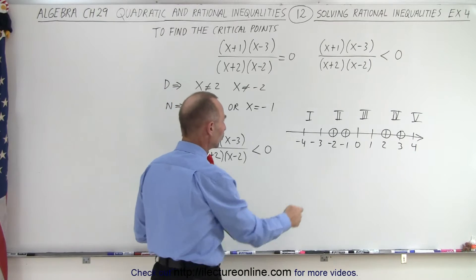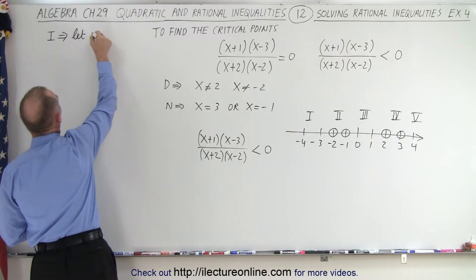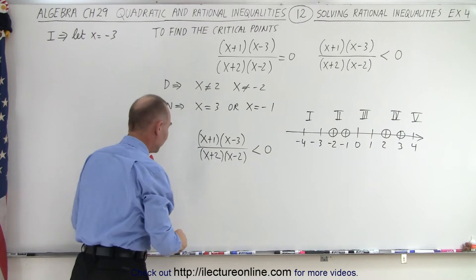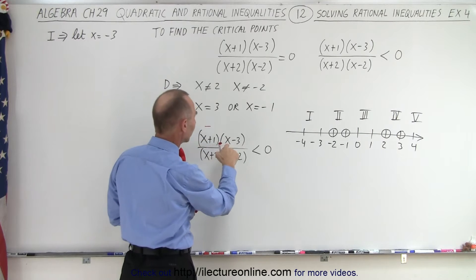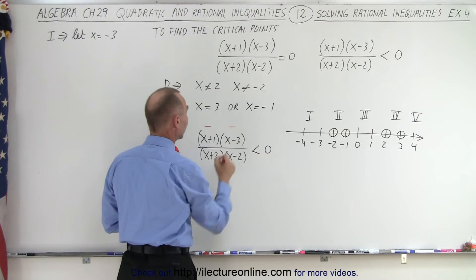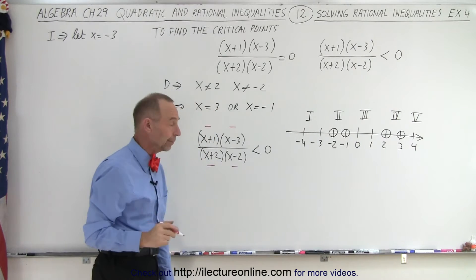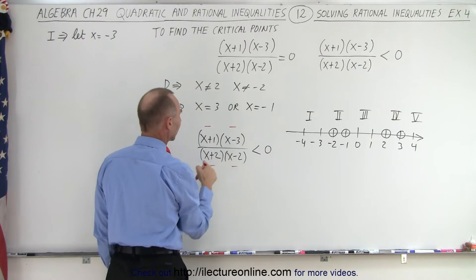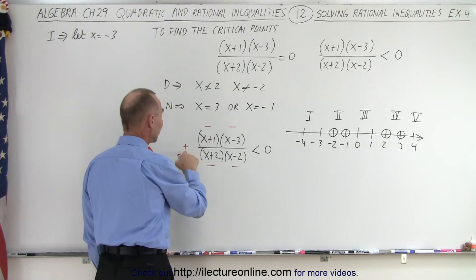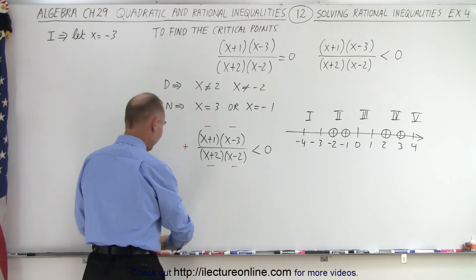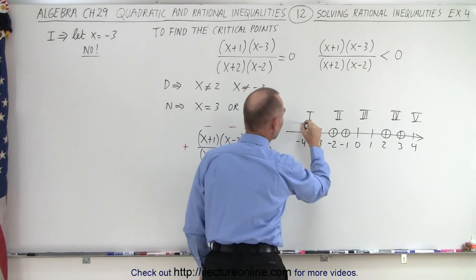For region one, let's pick the test point x = -3. Plugging in: negative three plus one is negative two, a negative value. Negative three minus three is negative six, also negative. Negative three plus two is negative one, negative. Negative three minus two is negative five, also negative. So we have a negative times a negative divided by a negative times a negative — four negatives cancel out to give a positive value. A positive value cannot be less than zero, so region one does not satisfy the inequality.